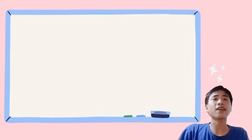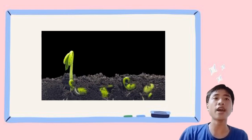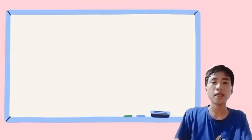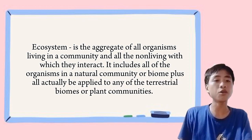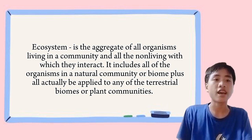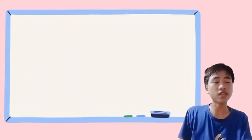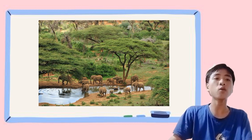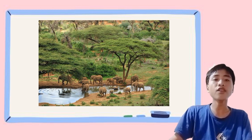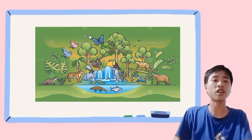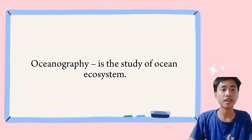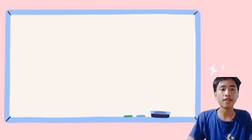This includes things like how animals find food, how plants grow, and how different species affect each other. Next is the ecosystem. An ecosystem is a community of living and non-living things that interact with each other. For example, a forest ecosystem includes trees, animals, insects, and the soil, water, and air around them. Everything in an ecosystem is connected and depends on each other to survive. Lastly, oceanography is the study of the ocean and everything in it, including the water, the plants, and the animals that live in it, and the land underneath it.